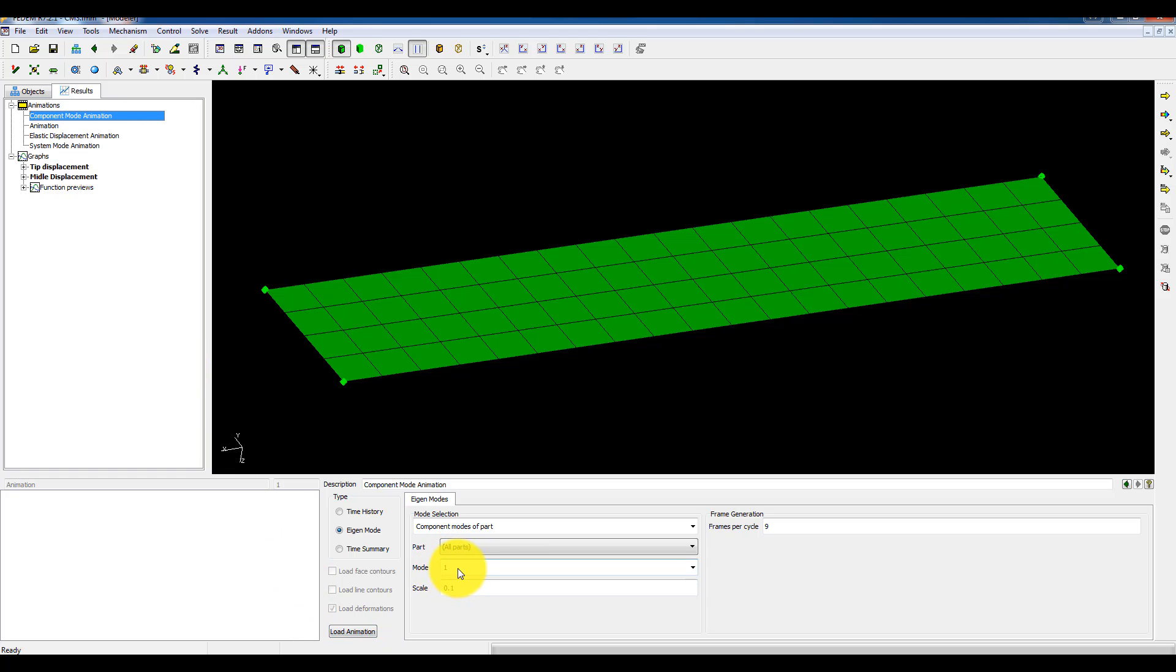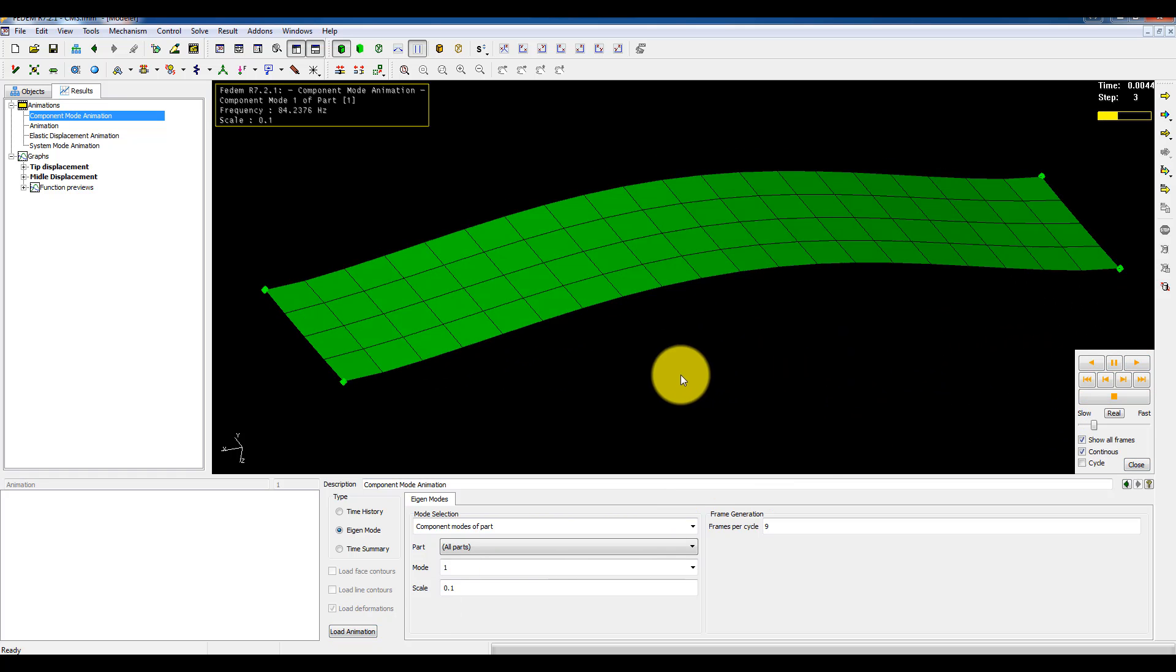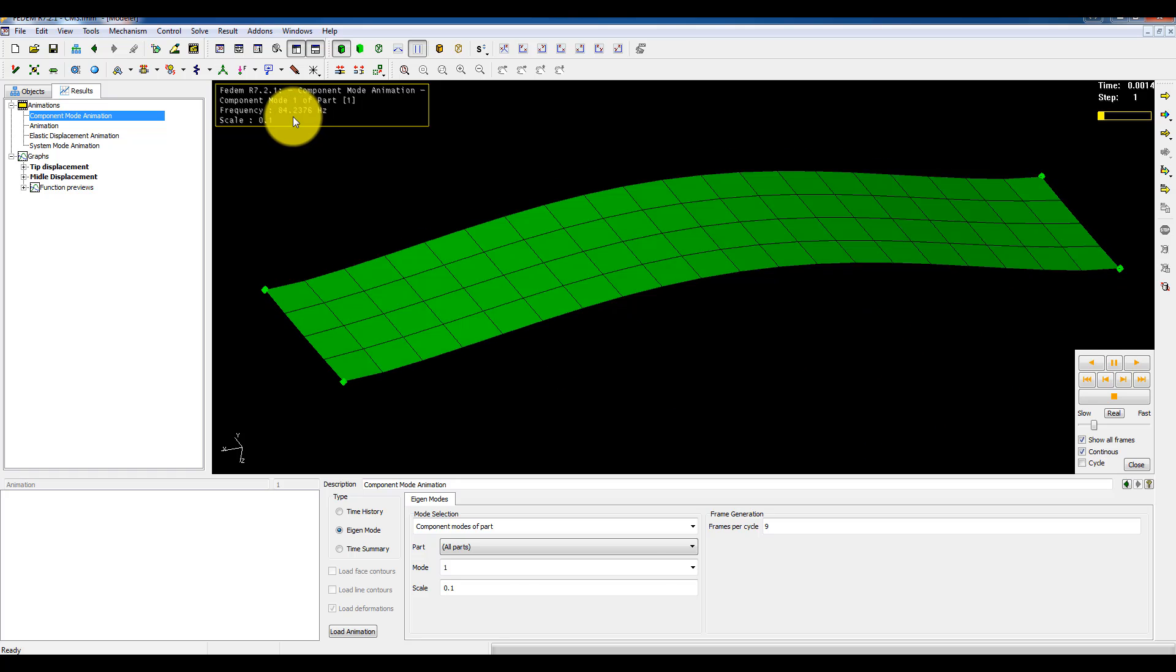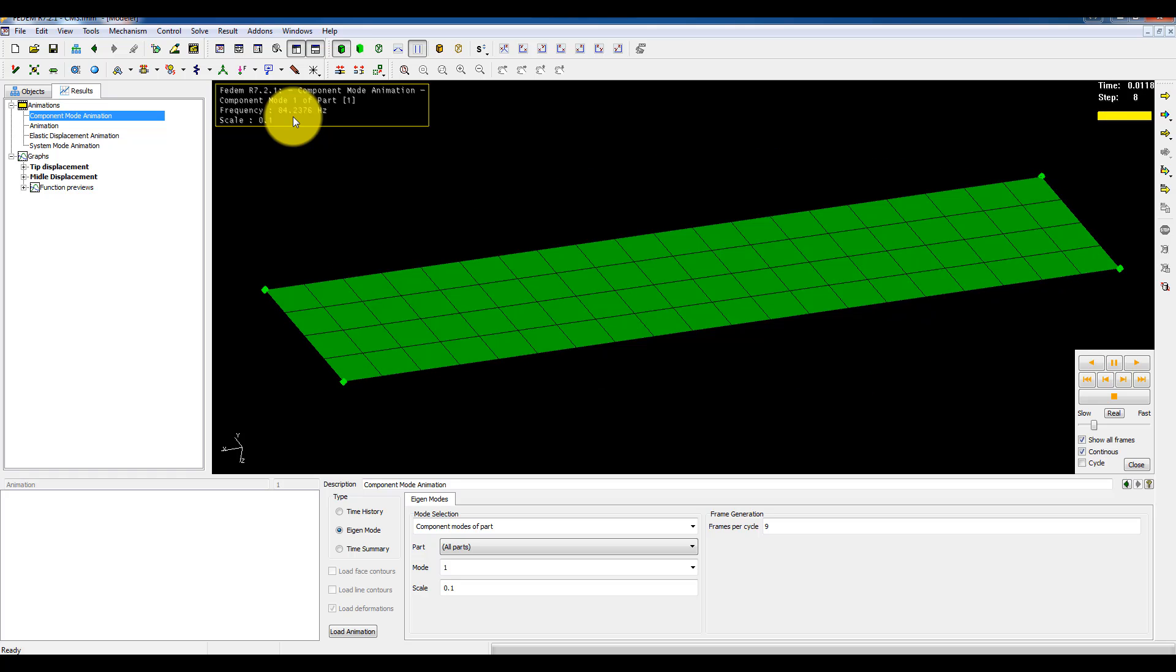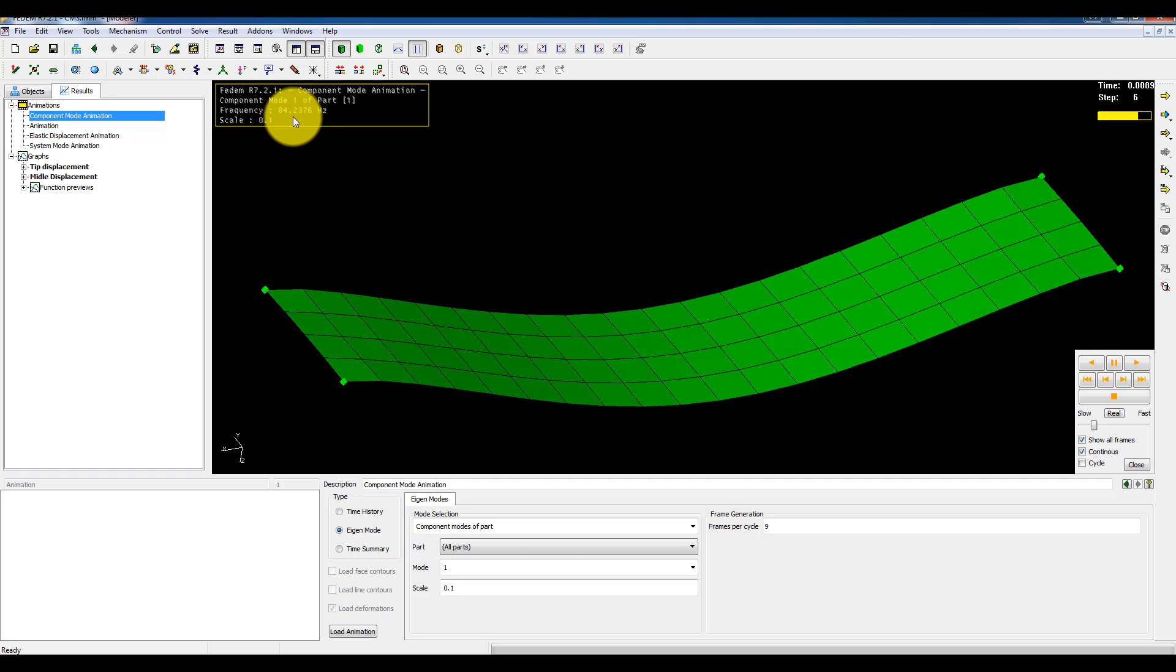I can animate them. I can load component mode number one. And as you can see it's the fixed interface normal mode. And this mode has an eigenfrequency of 84 Hz. And I should include this component mode if I have an input load acting in this frequency range.